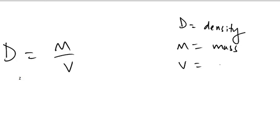Alright, so what is the density equation? Alright, so d equals m over v, right? d, of course, means density. m is mass. v is volume.